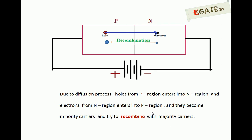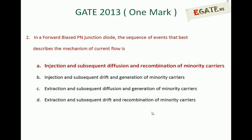The third process is recombination. When holes move into the n-side region from the p-side, they become minority carriers and recombine with electrons present in the n-region. Similarly, when electrons diffuse from the n-side to the p-side, they become minority carriers in the p-region and recombine with holes there. So the complete sequence under forward bias is: first injection, second diffusion, third recombination. The correct answer is injection and subsequent diffusion and recombination of minority carriers.